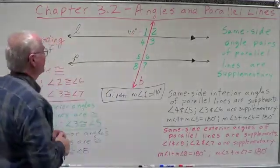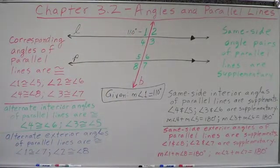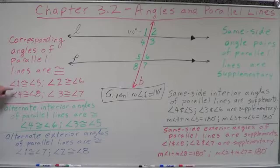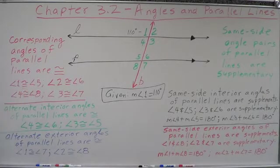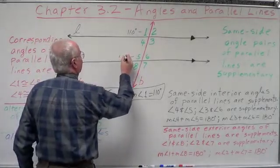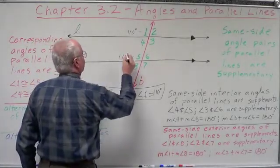Now let's see what else we can get a hold of. We know because of corresponding angles that angle 1 and angle 5 are congruent. Well, if angle 1 and angle 5 are congruent, what does that make angle 5? That's right — angle 5 is also 110 degrees.